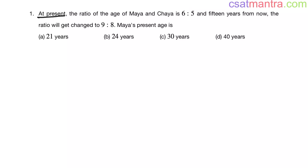At present, the ratio of the age of Maya and Chaya is 6:5, and 15 years from now the ratio will change to 9:8. What is Maya's present age?